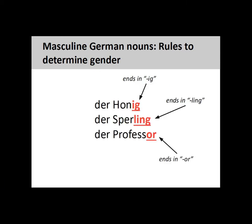Nouns ending in -IG, -LING, and -OR — such as 'Honig' (honey), 'Sperling' (sparrow), and 'Professor' — are masculine.